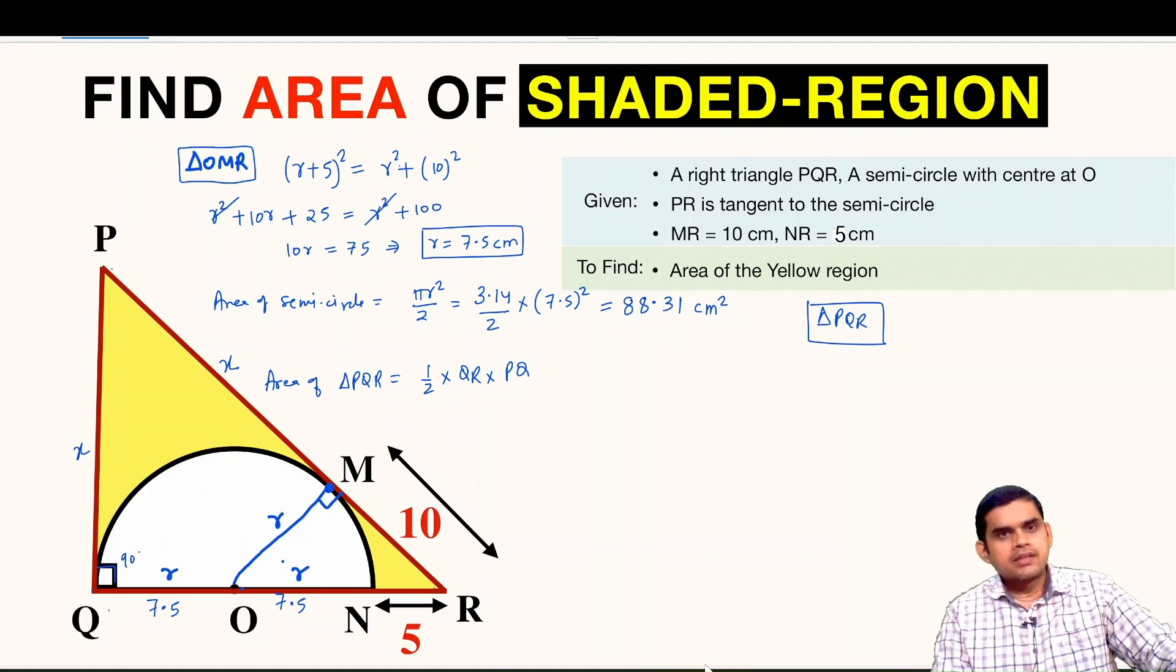So we have a property that if we have a circle, an external point if we select, and from here if we draw two tangents to the circle, then the length of both the tangents are equal. So here if PM is x units, so PQ will also be x units.